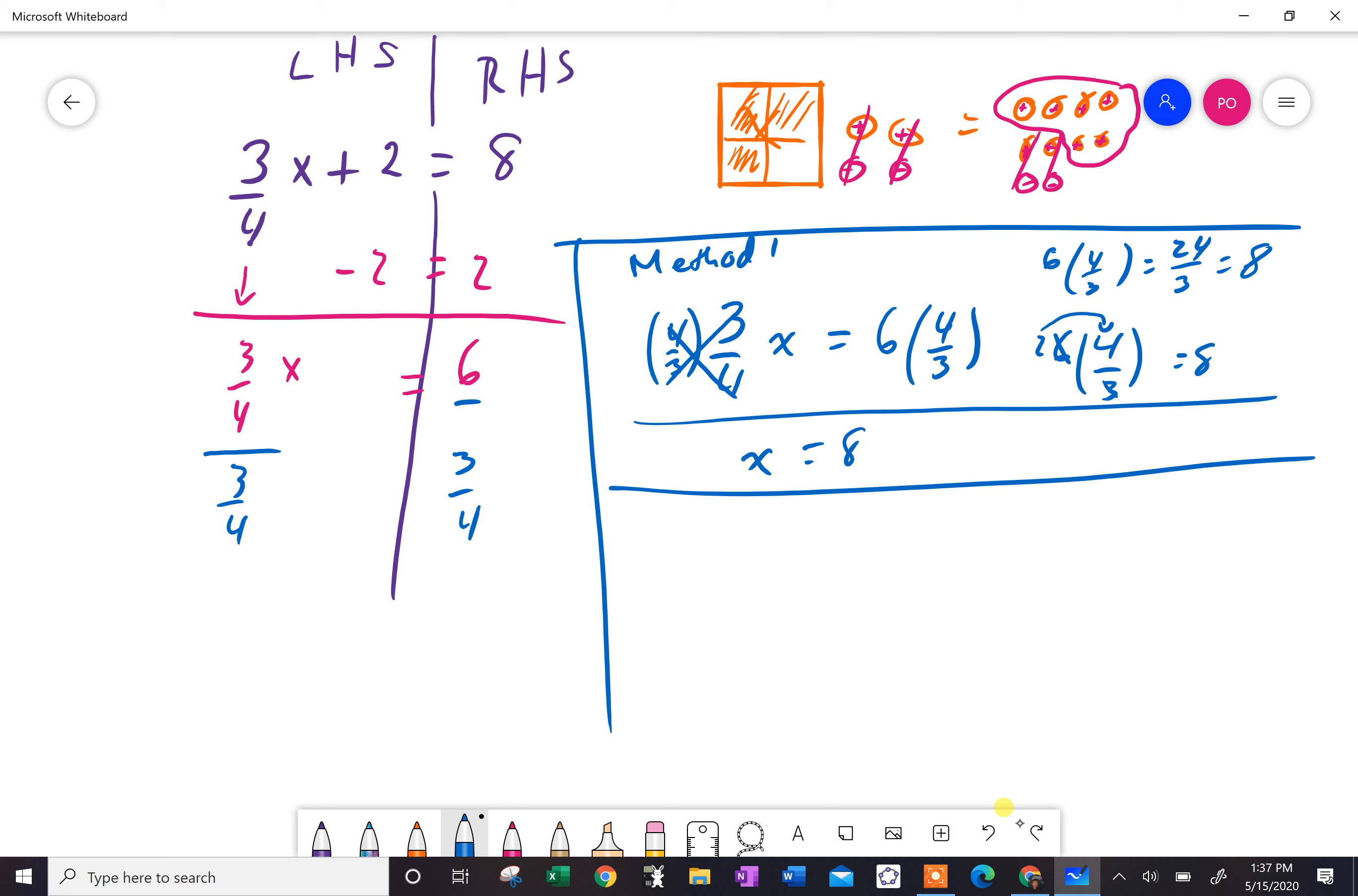Another method, which is kind of neat, is if you said three-quarters of x equals six, you could divide by three-quarters. Then you could remember, wait a second, what did we just do? We said six divided by three-quarters.